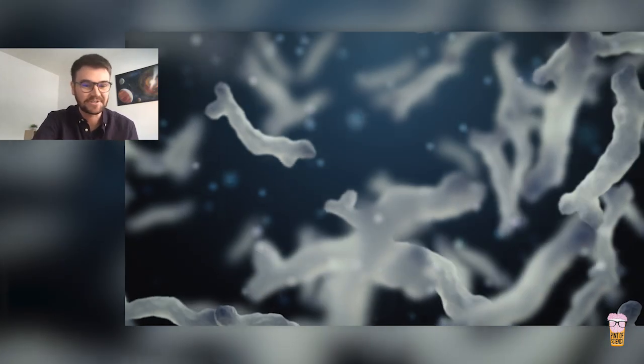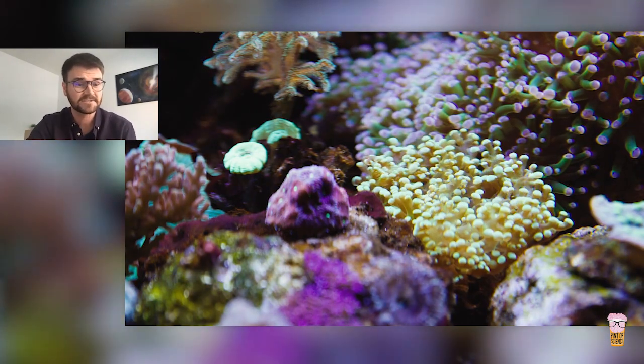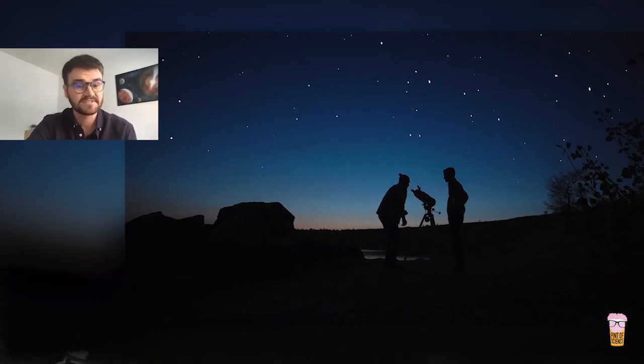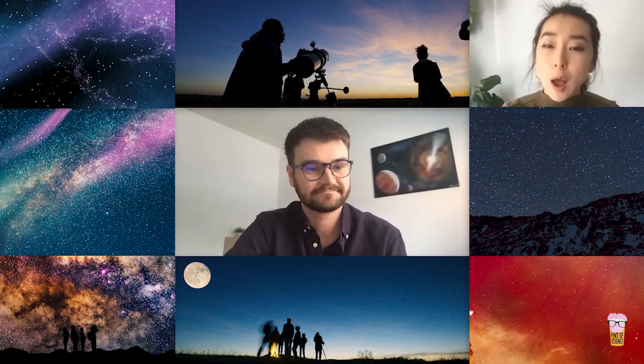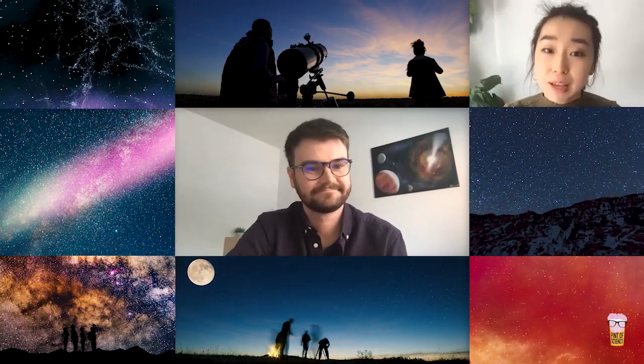To have a chance of finding aliens, maybe bacteria or even plants and animals like us, on exoplanets, astronomers need to find small rocky planets with large quantities of liquid water. So how do these scientists find their exoplanets in the first place, Dominic?